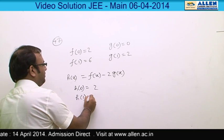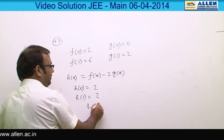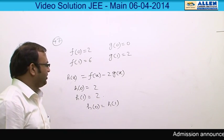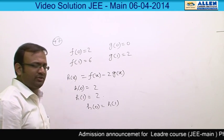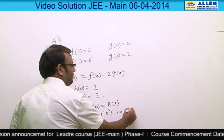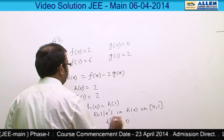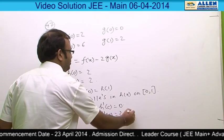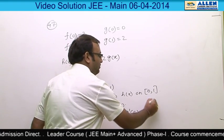At h(1): f(1) = 6 and g(1) = 2, so h(1) = 6 - 4 = 2. Since h(0) = h(1) and h(x) is differentiable, we can apply Rolle's theorem on [0,1]. By Rolle's theorem, h'(c) = 0, which implies f'(c) = 2g'(c). Therefore option 4 is correct.